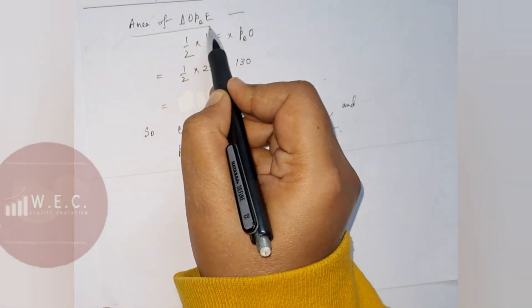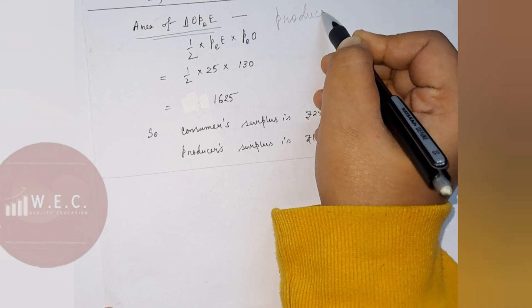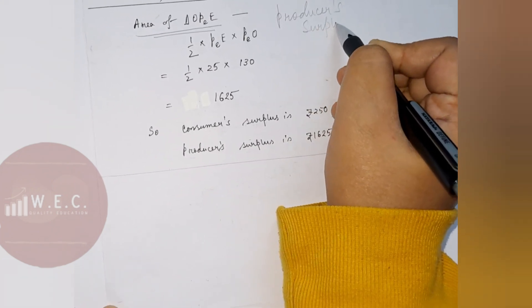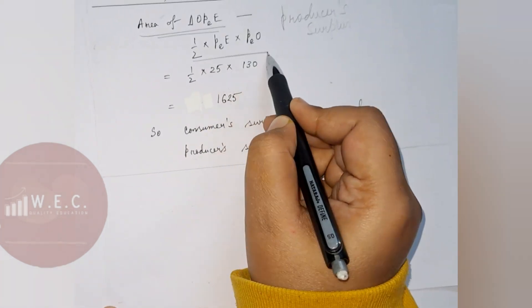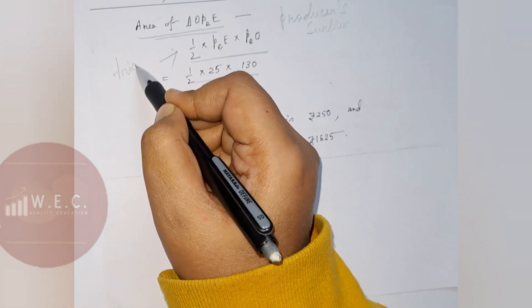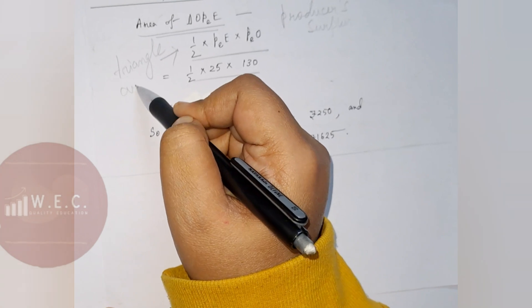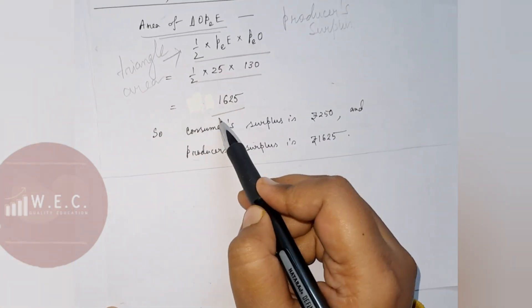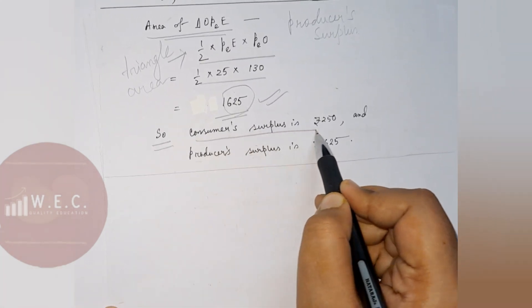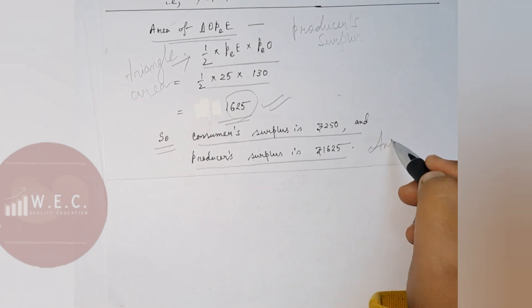On the other hand, the producer surplus — the area of triangle OpeE — is 1625 rupees. So that is the answer to this question. Thank you.